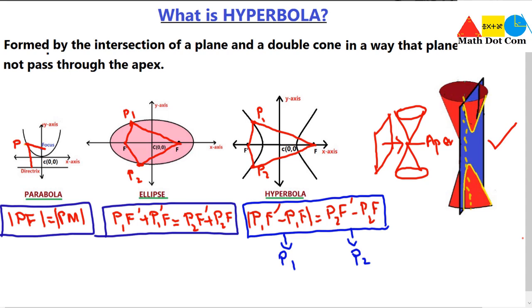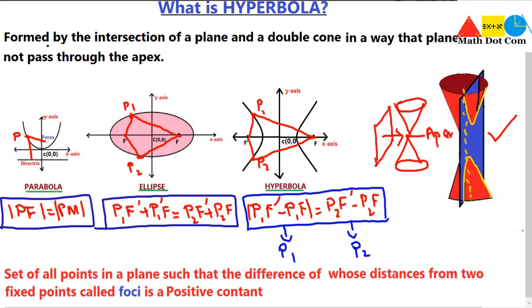So the definition of hyperbola in terms of coordinate axes is: the set of all points in a plane such that the difference of their distances from two fixed points, called foci, is a positive constant. For any points on the hyperbola, the difference of distances from the two foci will always be equal — that is how hyperbola is defined and how it differs from ellipse and parabola.